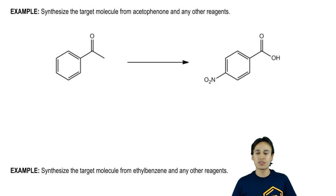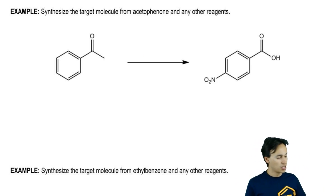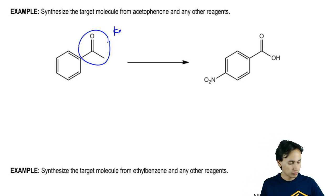What's going on here? What are the different transformations that are taking place? One thing that's happening is that I have a ketone that at some point needs to become a benzoic acid, so that's interesting.